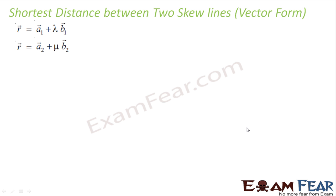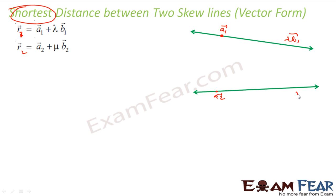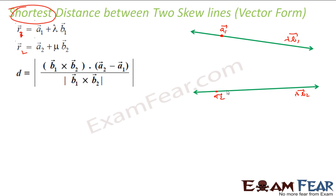So we talk about the distance between two skew lines in vector form. I have two lines: R1 = A1 + λB1 and R2 = A2 + μB2. I have to find the shortest distance between them. Please note, I have to find the shortest distance.